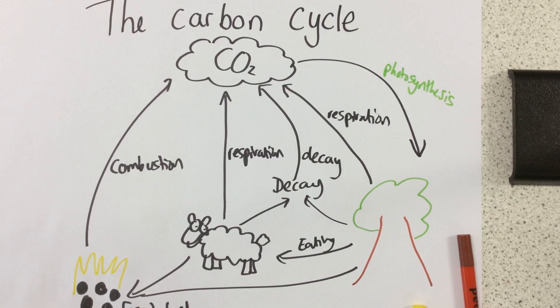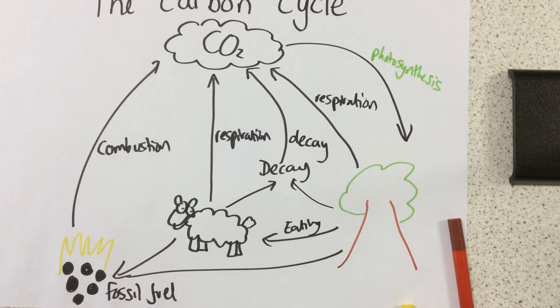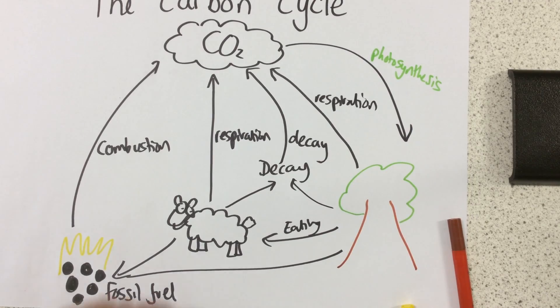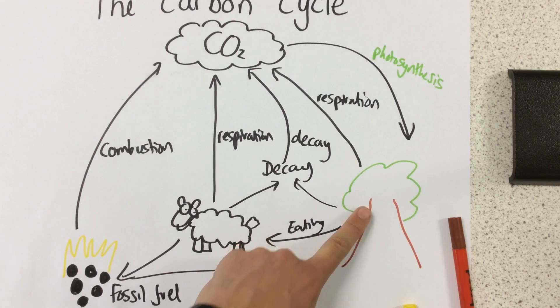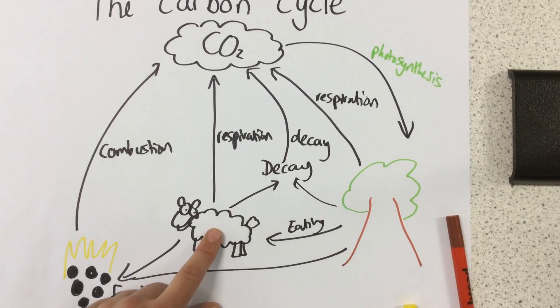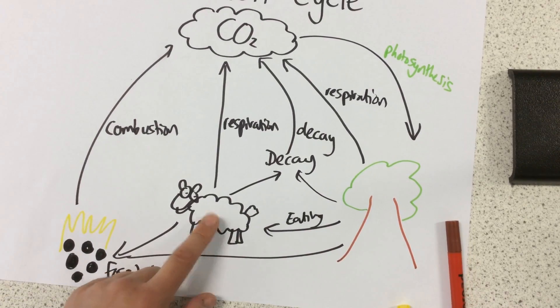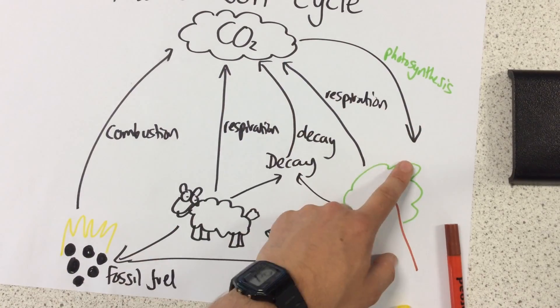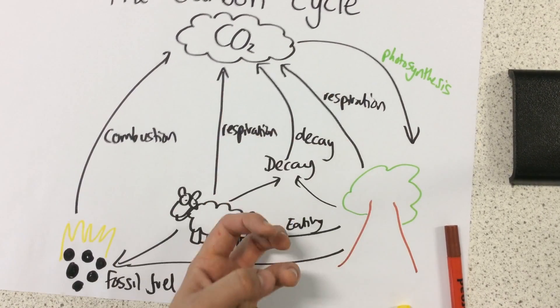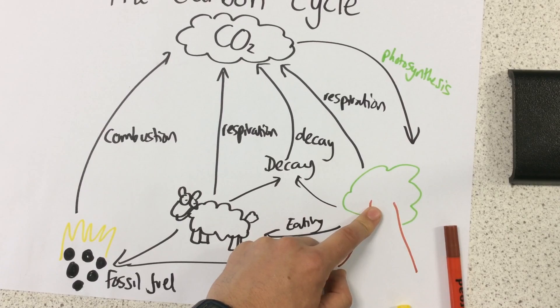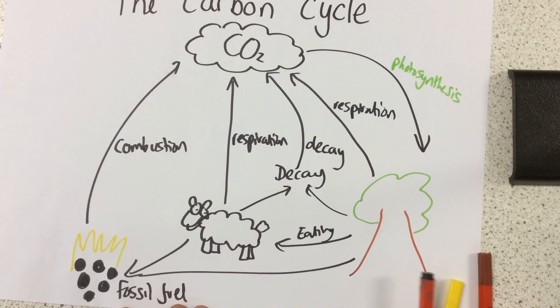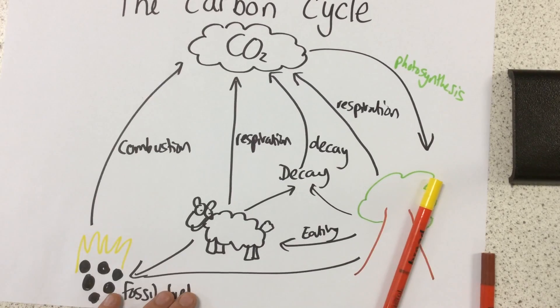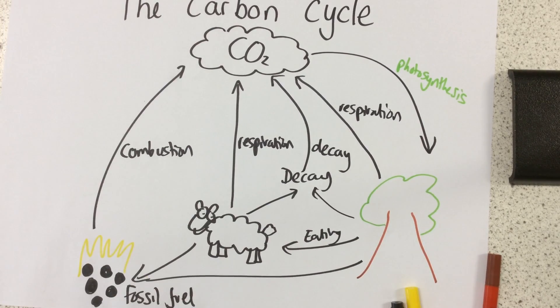That essentially is the carbon cycle. The way to remember it is just work one step at a time. Think about the different potential fates of our plant and of our animal. Remember that the only arrow coming out of the atmosphere, the only thing that's taking carbon dioxide out of the atmosphere, is plants photosynthesizing. And apart from that, just practice, practice, practice. Thank you very much.